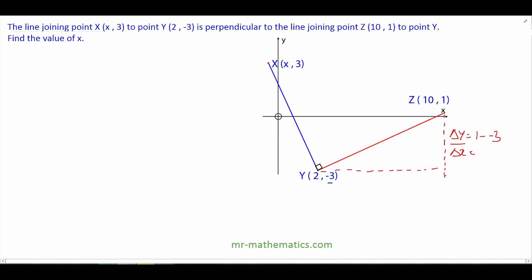So the change in y is 1 minus negative 3. The change in x is 10 minus 2. So the gradient is 1 take away negative 3, which is 4 over 8, which is a half. So the gradient of the red line is a half.